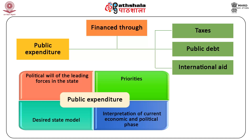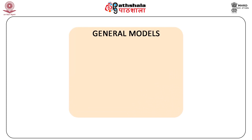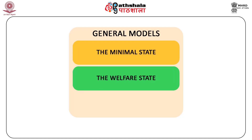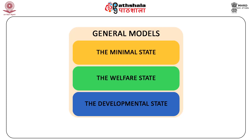Bureaucracy may play an important decision role for the actual expenditure. There are three general models of state governments to which public expenditure corresponds: one, the minimal state; two, the welfare state; and three, the developmental state.